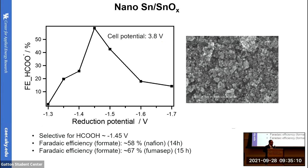We then synthesized and tested tin oxide nanoparticles. This figure shows the morphology of the electrode, and this is Faradaic efficiency as a function of electrode potential. We got a peak Faradaic efficiency at -1.45 V, which is 100 millivolts less negative than the copper one, and we got a Faradaic efficiency of 58% over 14 hours. This was using Nafion, a cation exchange membrane separating cathode and anode. We got some issues with that, and replaced it with a bipolar membrane, and with that we got 67% over 15 hours — that is very good, and it is at the lab scale.